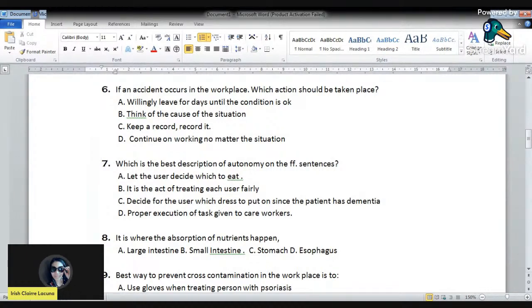Okay, so let's proceed to number eight: it is where the absorption of nutrients happen. A: large intestine. B: small intestine. Letter C: stomach. Letter D: esophagus. I think it's just very easy, and this appeared in the exam way back November 2019. It's very easy: absorption of nutrients happen on what part of the digestive system? Okay, so the correct answer is letter B: small intestine. And if ever in a medical question, it is where to filter and cleanse the blood, it would be the kidney.